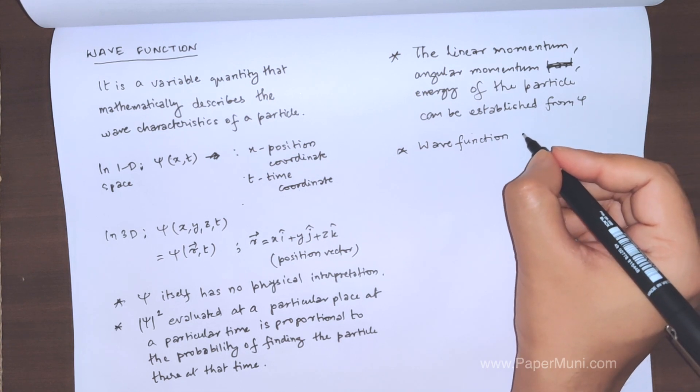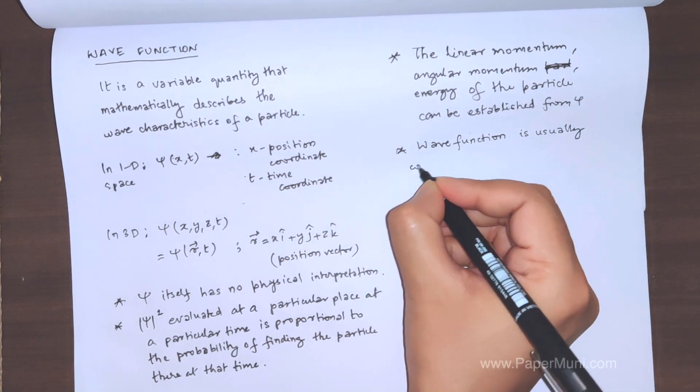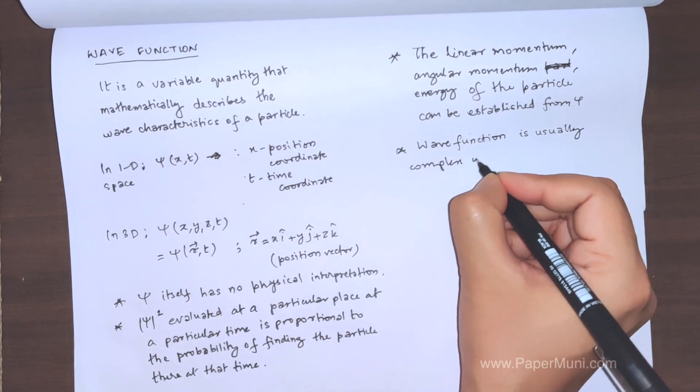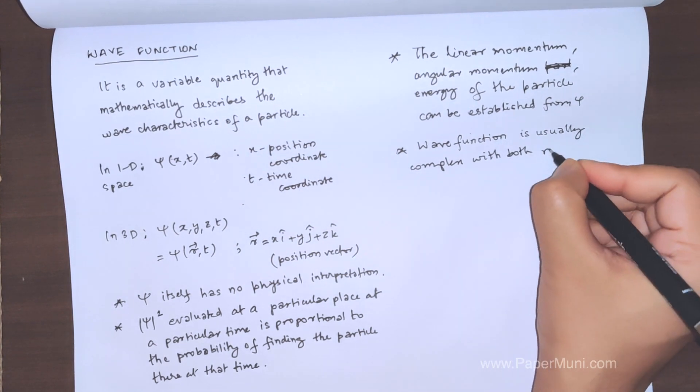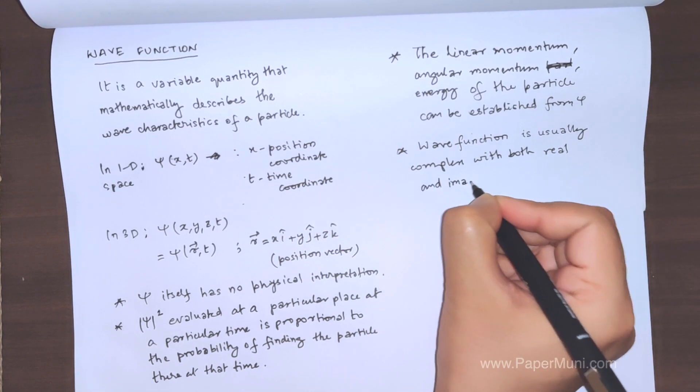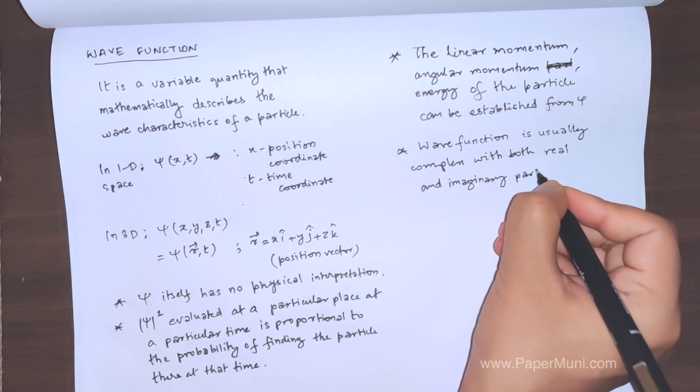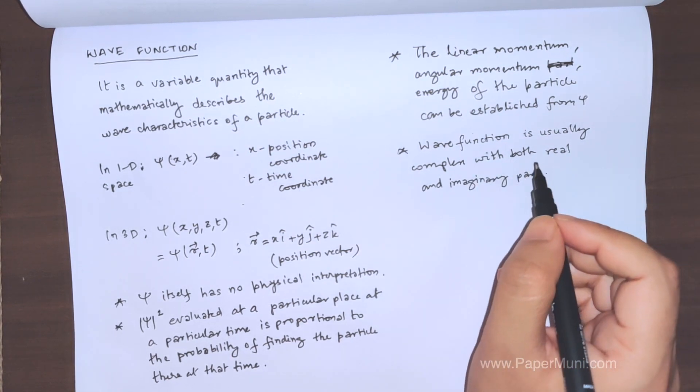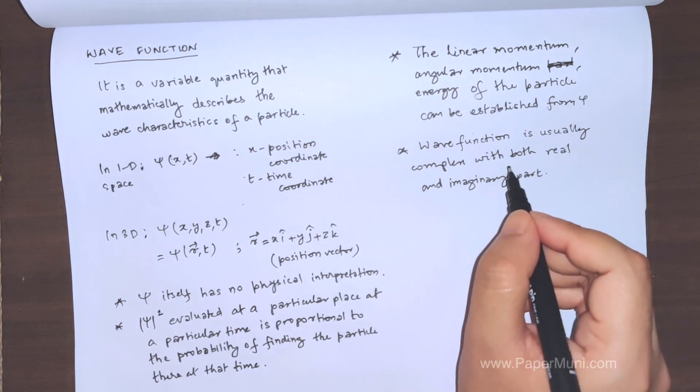The wave function is usually complex with both real and imaginary parts. The wave function is a solution to Schrödinger equation, and Schrödinger equation has a complex part to it. So that's why the psi can be real or it can be complex.